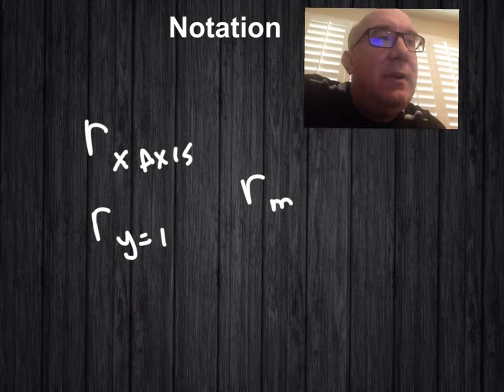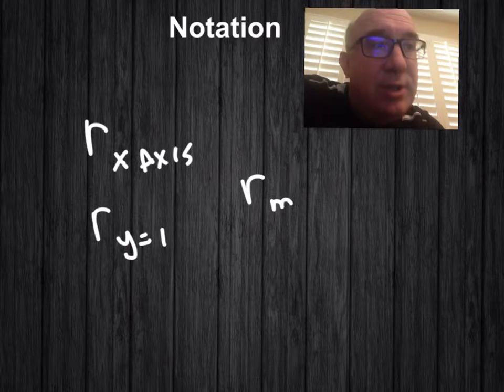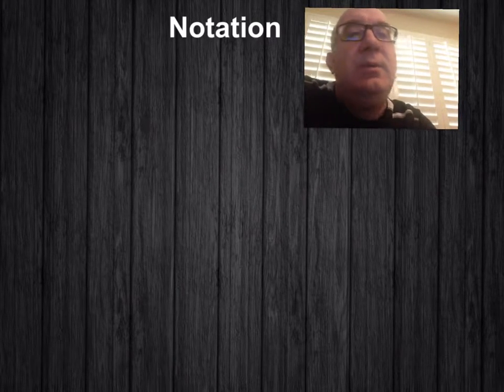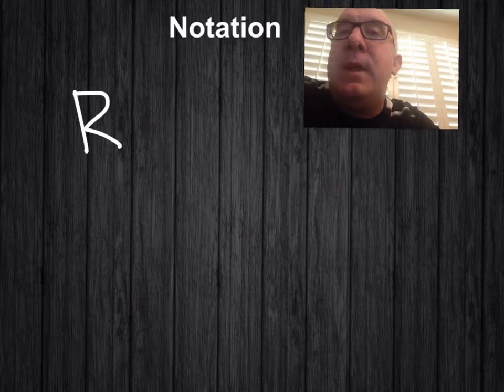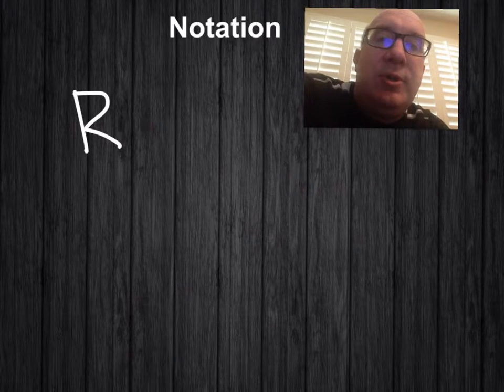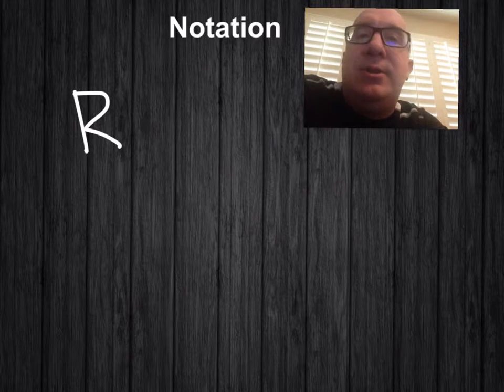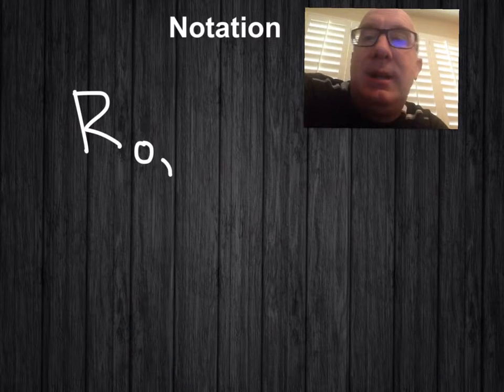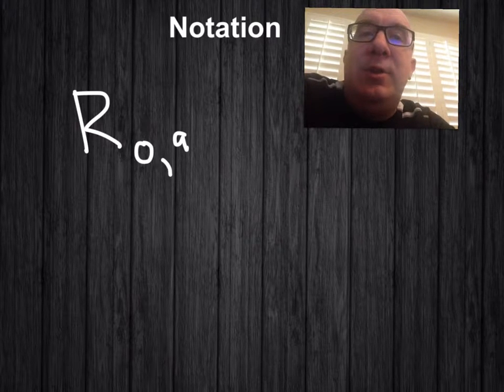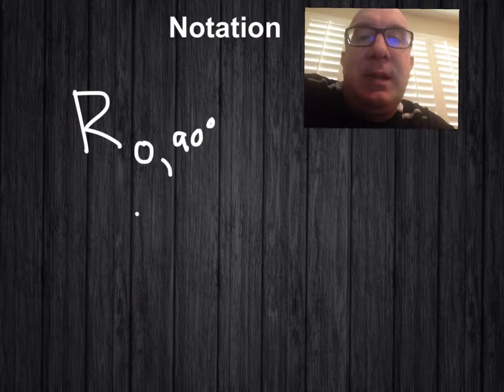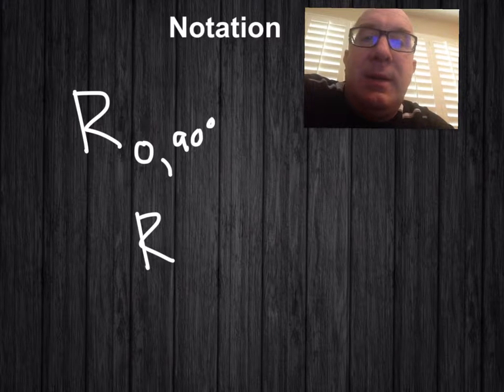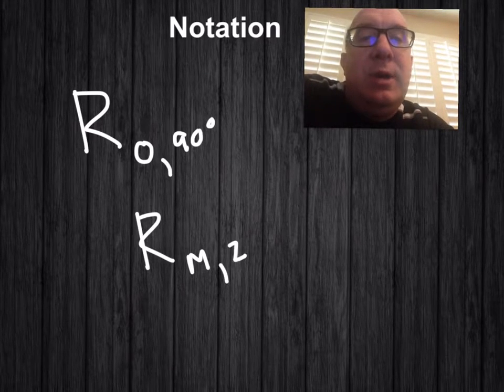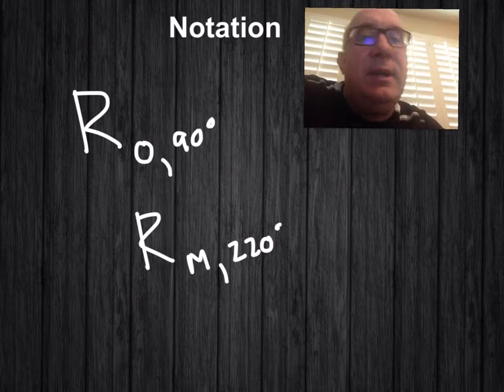In the case of a rotation, what happens is that typically, again, we use uppercase R. Now, again, that isn't always for sure, but the major difference is the subscript. Normally, you'll distinguish a point like O, the origin, and then a degree value, so something like this, or something like about point m at 220 degrees or whatever it is.